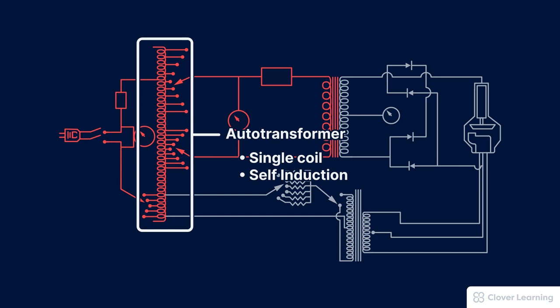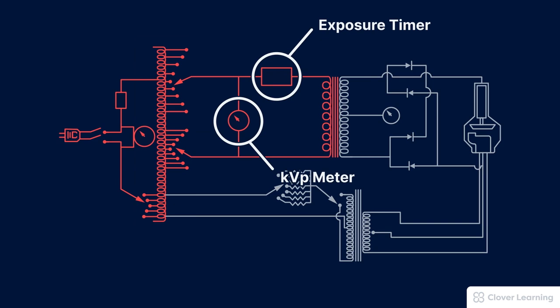There are two components that follow the auto transformer: the kVP meter and the exposure timer. The electricity on the primary side of the circuit is still in volts and not kilovolts. But there's a reason that we place the kVP meter here. It's pretty simple. Volts are easier to measure and the reading can be easily converted to kilovolts.